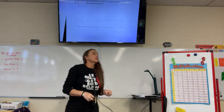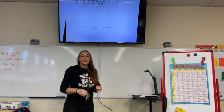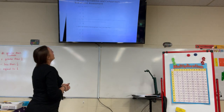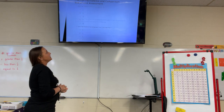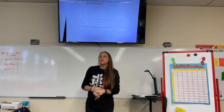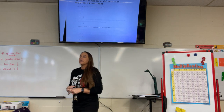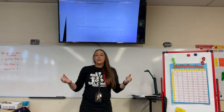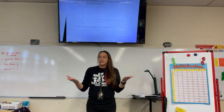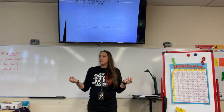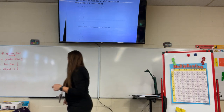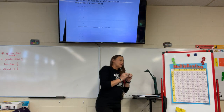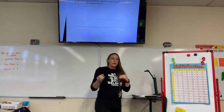Today we are going over our study guide for our unit 2 assessment. Number 1 says select all fractions that are equivalent to 3/12. Who can raise their hand and tell me a way that we've learned to tell if two fractions are equivalent? Dexter says cross multiply. Yes, so that's what we're going to do — we're going to cross multiply each one of these fractions to 3/12.